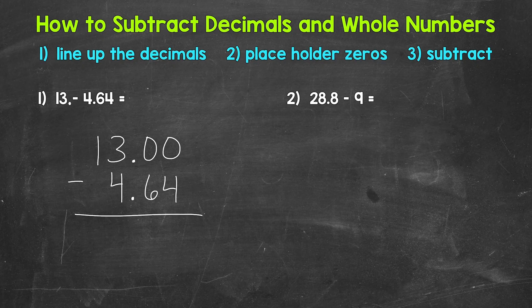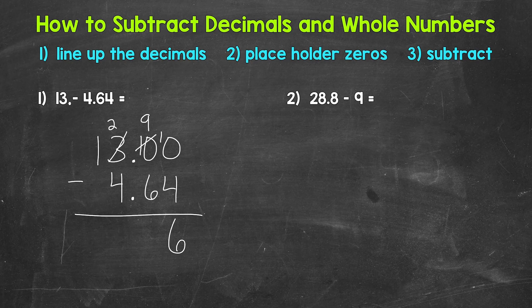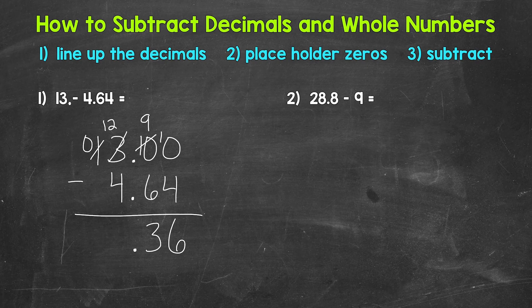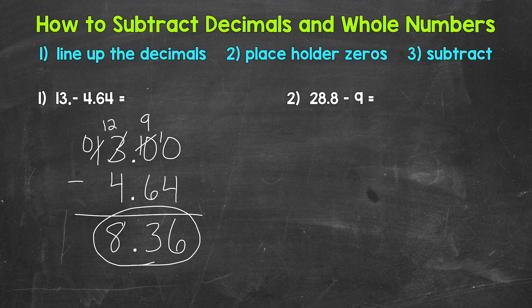Now we're ready to subtract, starting with the hundredths place. We have 0 minus 4, so we need to borrow — going all the way over to the 3, which becomes 2. We get 10 in the tenths, which becomes 9, and then 10 minus 4 gives us 6. Then 9 minus 6 gives us 3. Bring the decimal straight down. Then 2 minus 4 requires borrowing from the 1, which becomes 0, giving us 12 minus 4 equals 8. Our final answer is 8 and 36 hundredths. So 13 minus 4 and 64 hundredths equals 8 and 36 hundredths.